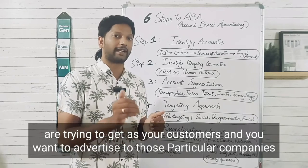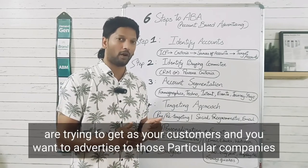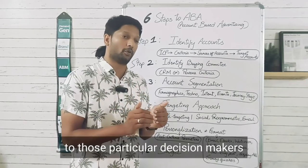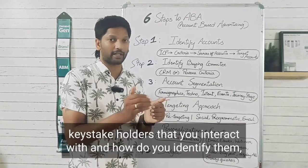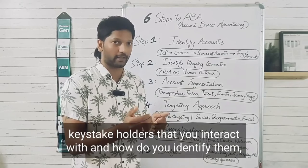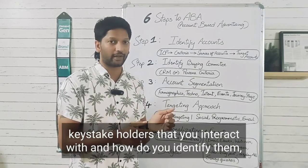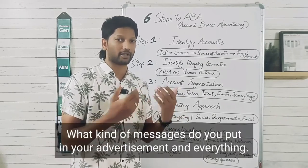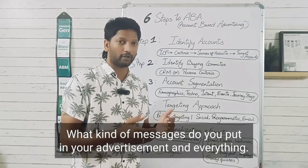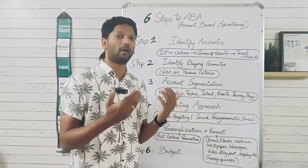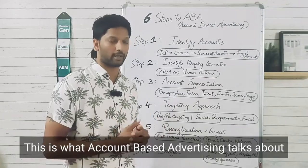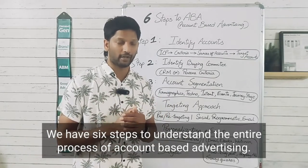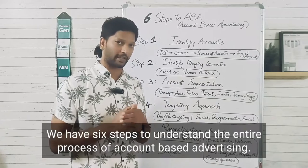These are the companies you are trying to get as customers, and you want to advertise to those particular companies — to those particular decision makers or key stakeholders you interact with. How do you identify them, how do you reach them, and what kind of messages do you put in your advertisement? This is what Account Based Advertising talks about. We have six steps to understand the entire process.